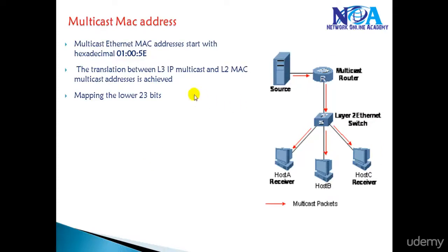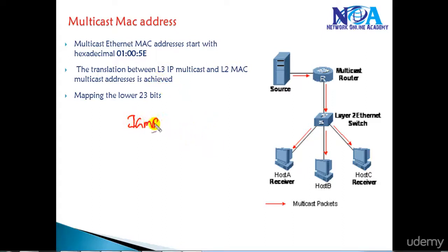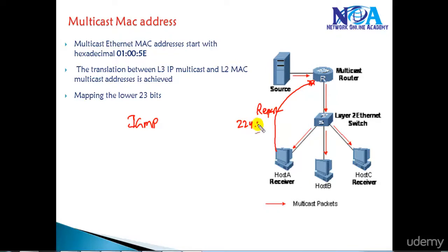Let's first try to understand multicast MAC. If we quickly revise the basic concept of the IGMP protocol: whenever a host wants to receive multicast traffic, it informs the local router with a report message saying it wants to receive traffic for a particular group. The router figures out the source using PIM protocol and gets the multicast traffic from the source.